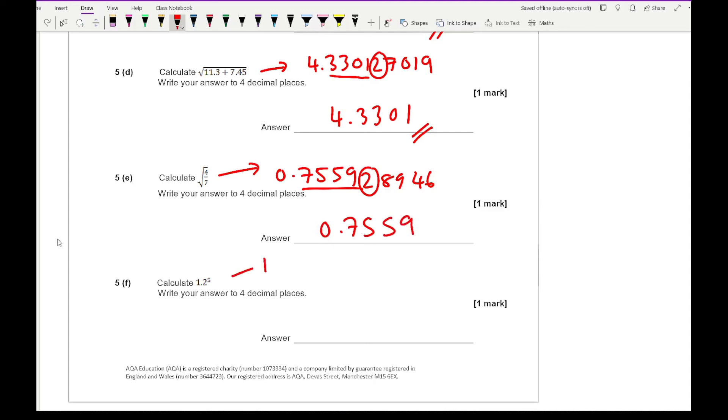Finally, 1.2 to the power of 5. That gives me 2.48832. Rounding that to 4 decimal places gives 2.4883. That concludes this first test on rounding.